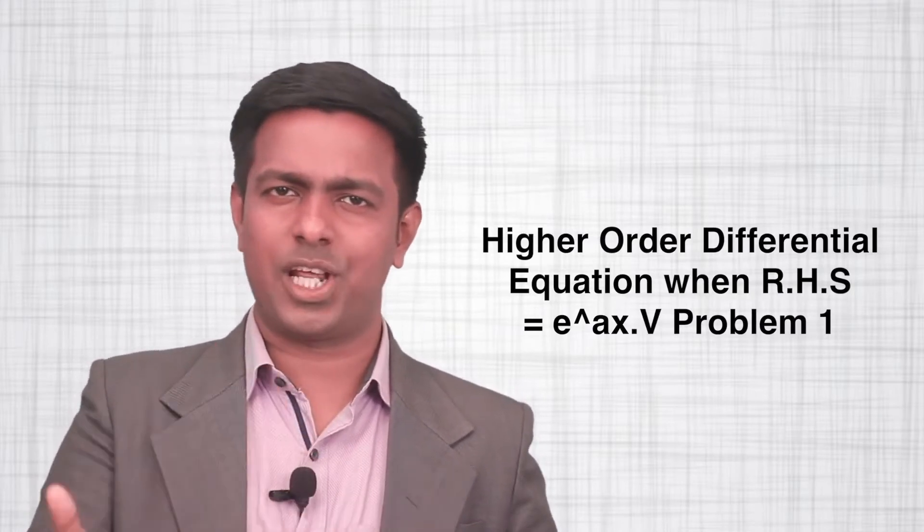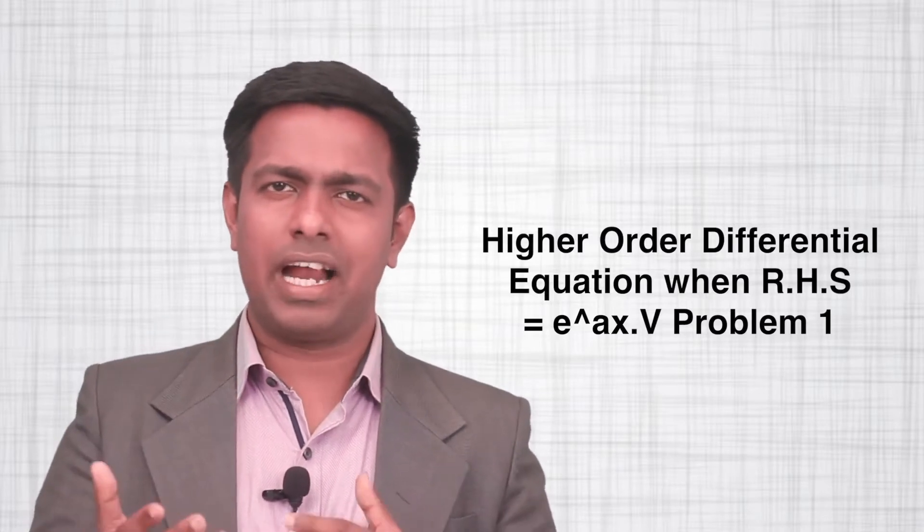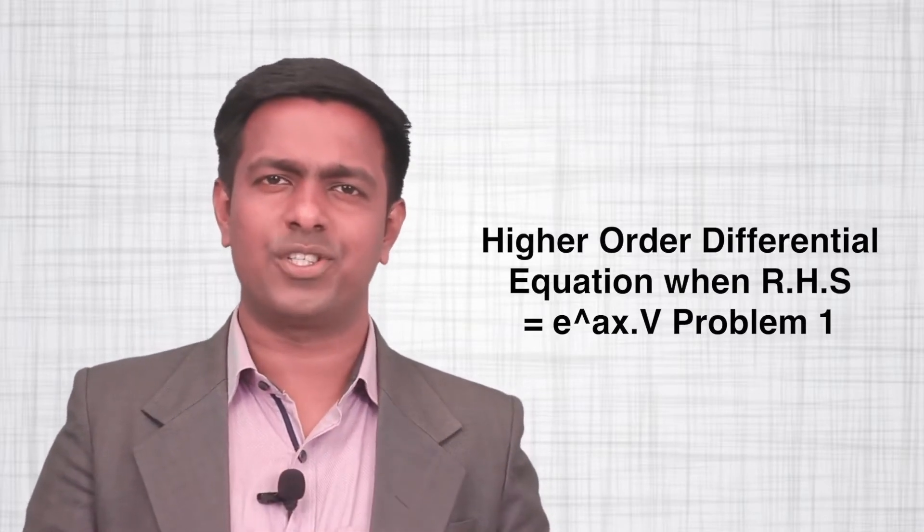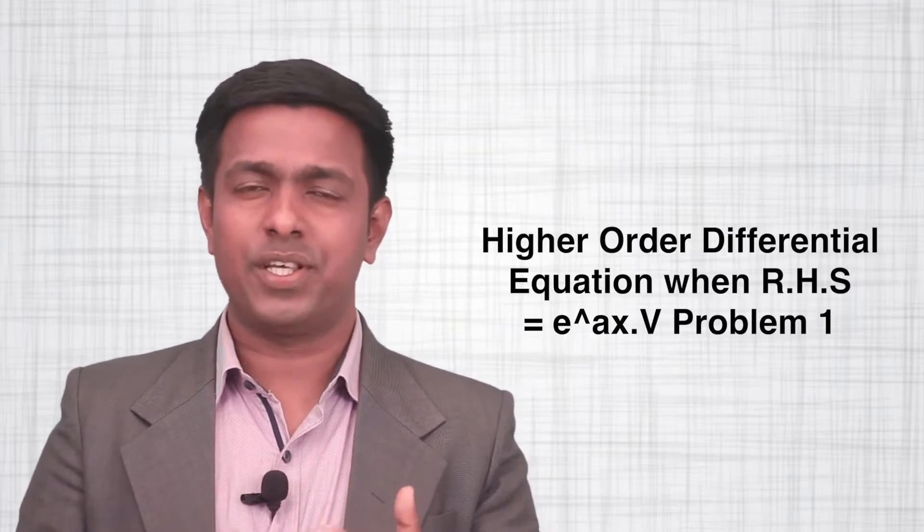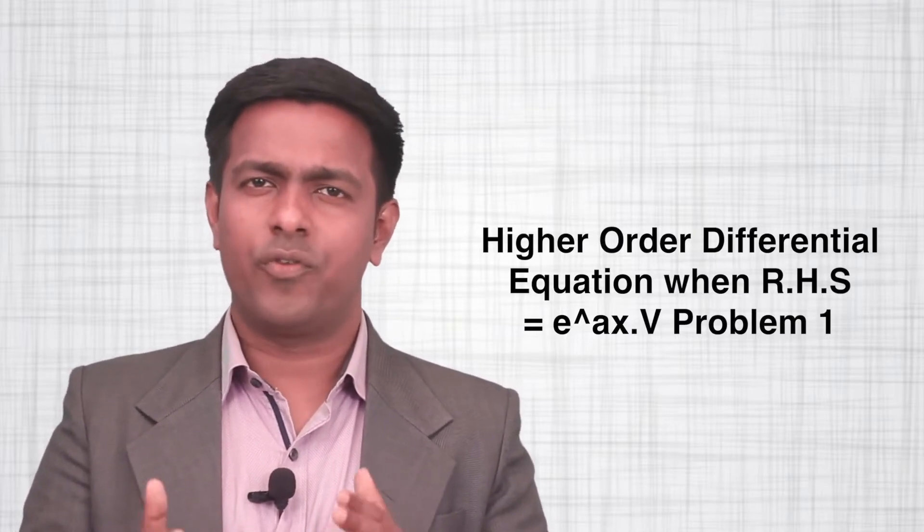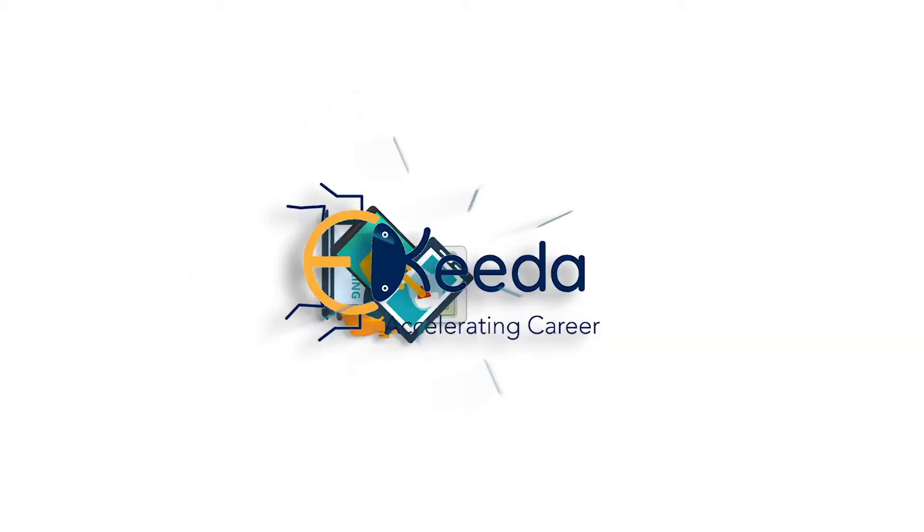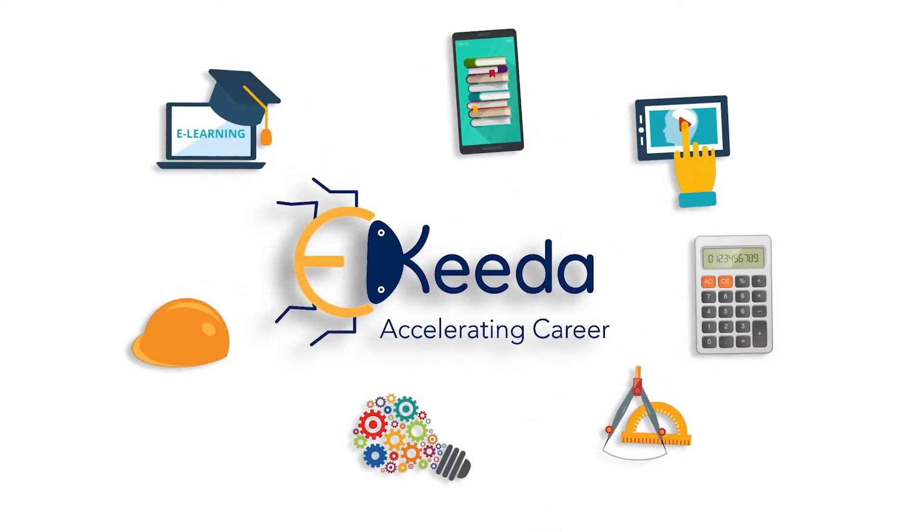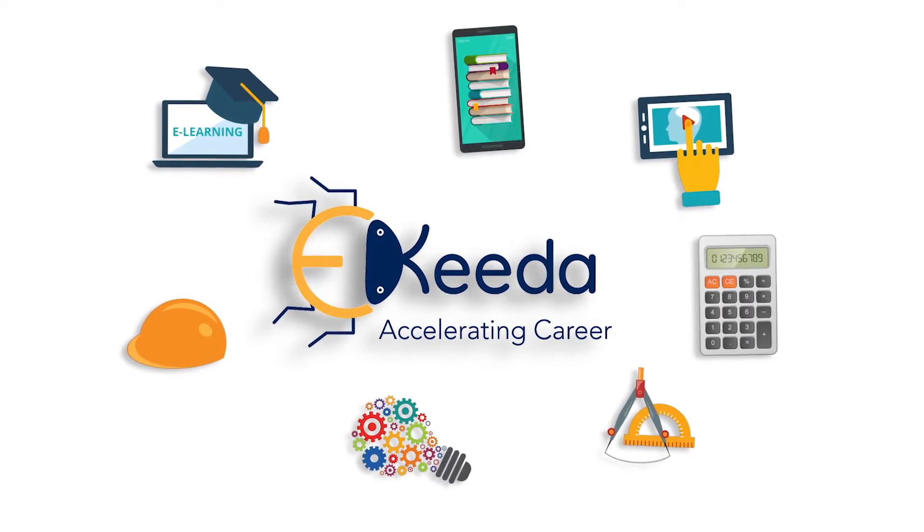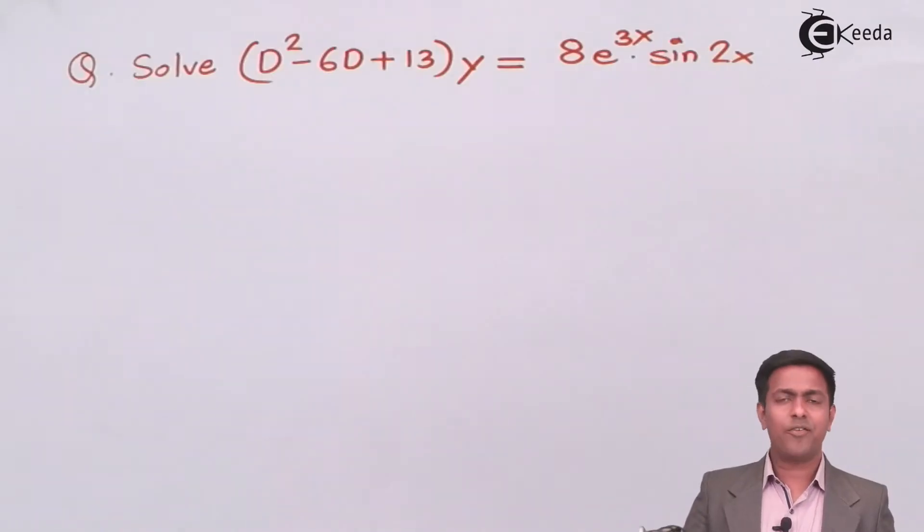Let's see how to solve such type of questions and get the solution of differential equation by using the steps which we have learned in the previous video. So here we have D² - 6D + 13 into y equal to 8 into e to the power 3x into sin 2x.